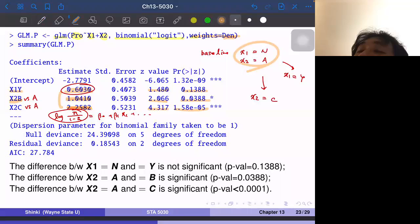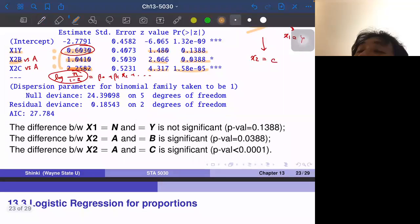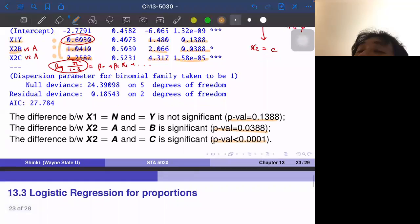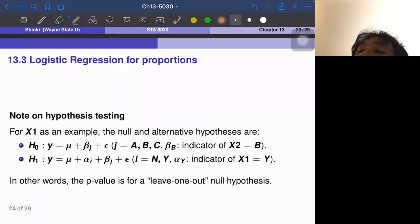So at least we can interpret this coefficient, the sign of the coefficient. So which is better? So in this case, X1 equals Y is better than X. X2 is better than X2 equals A. X2 equals C is better than X2 equals A. And the significant, so the last two are significant, and the first one is not really significant.